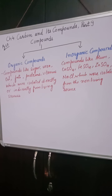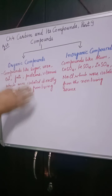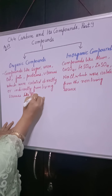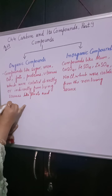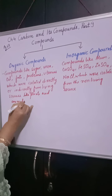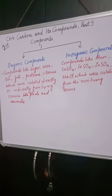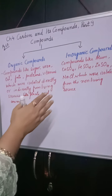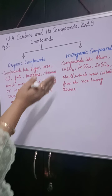Organic compounds — compounds like sugar, urea, oil, fats, proteins, vitamins — which were isolated directly or indirectly from living sources like plants and animals, are said to be organic compounds. Those compounds obtained from living sources, whether from plants, animals, or human beings, were known as organic compounds.